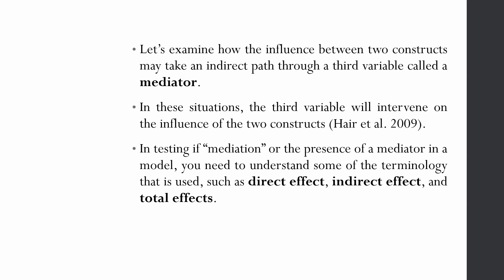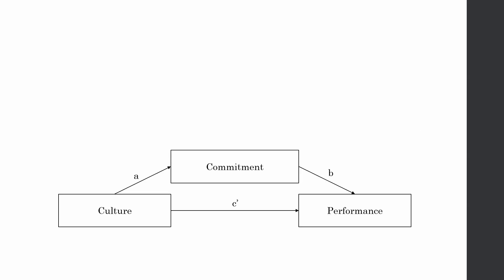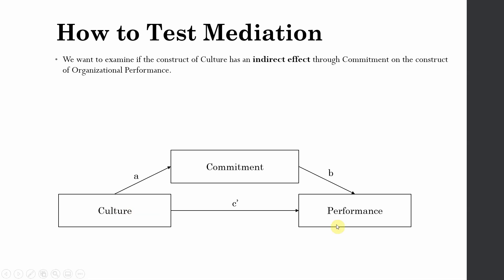In testing the presence of a mediator in a model, you need to understand some terminologies: direct effect, indirect effect, and total effect. Here is the model we intend to test — commitment is our mediator, and we want to find out whether the impact of culture (IV) on performance (DV) is passing through the third variable, commitment. We want to assess whether culture influences commitment and then commitment influences performance, or whether the impact is just direct. We want to examine if culture has an indirect effect through commitment on organizational performance.